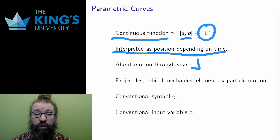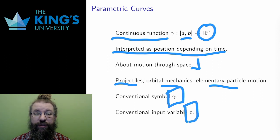Therefore, parametric curves are models for projectiles, for satellites and other orbital mechanics, for elementary particles and atomic models, and any other type of movement. The conventional symbol for a curve is gamma, and the conventional input is t for time.